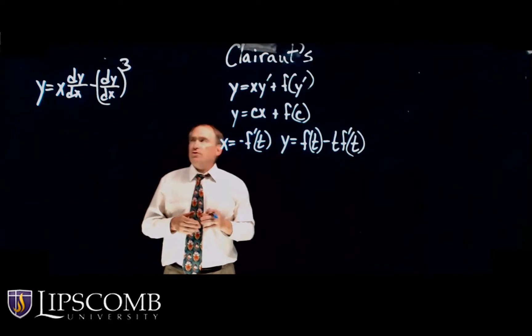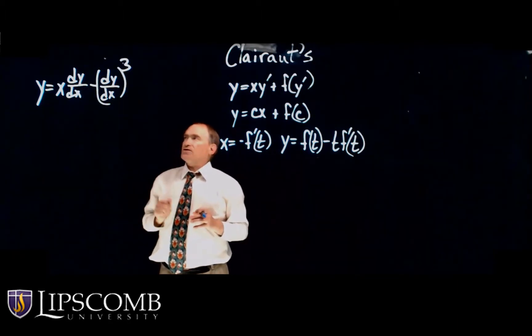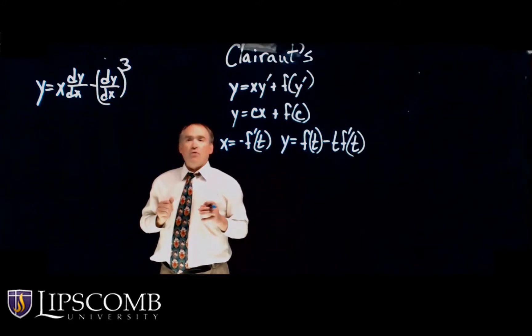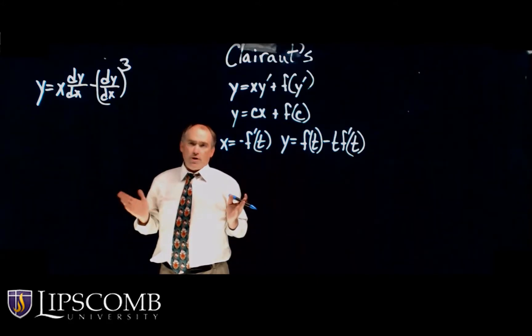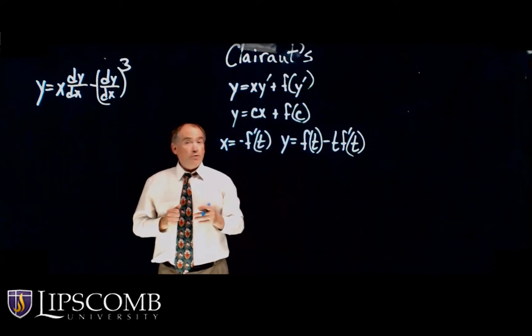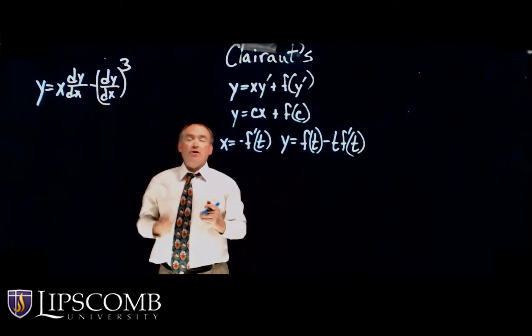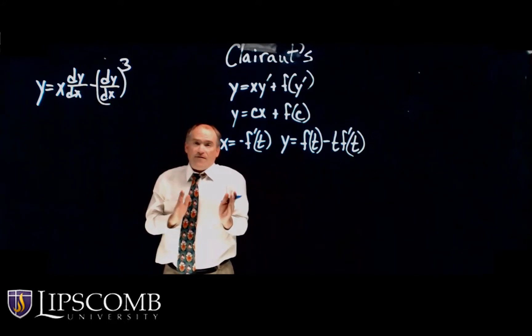So I want to do one example here. Y equals X times dY/dX minus dY/dX quantity cubed. Okay. So I've got it already in the form of Clairaut's equation, dY/dX rather than Y prime. So I know a family of solutions.